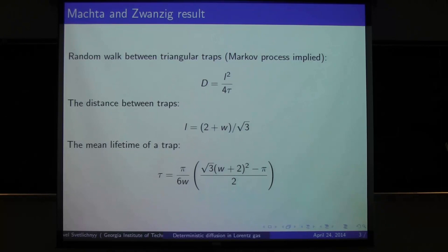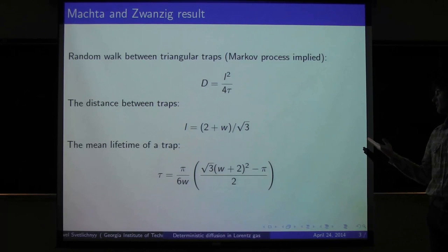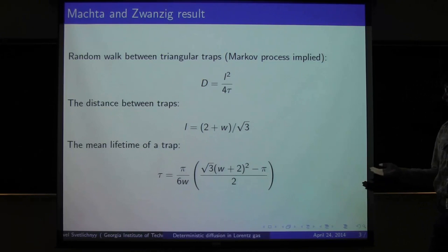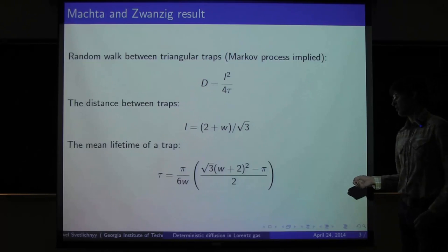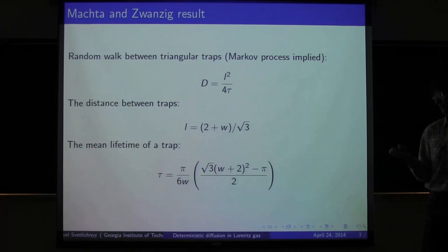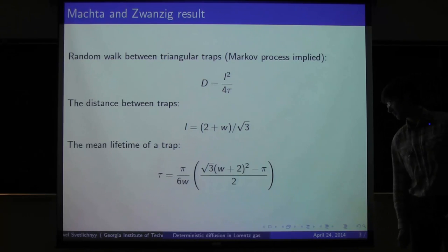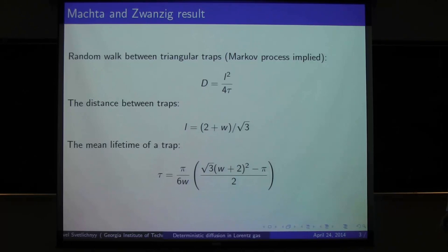These are traps that are produced by free spaces on the hard disk lattice. For this calculation, we just have to calculate the distance between traps and the mean lifetime of a trap. The mean lifetime of a trap can be estimated by considering which part of the phase space of a particle inside the trap escapes from the trap.